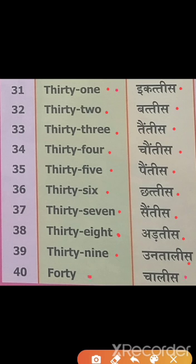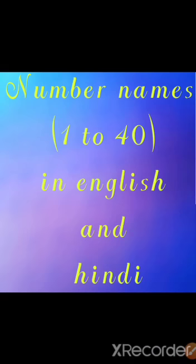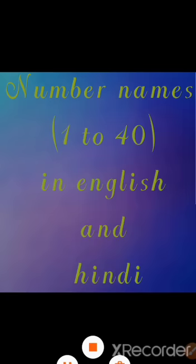THIRTY ONE 31, THIRTY TWO 32, THIRTY THREE 33, THIRTY FOUR 34, THIRTY FIVE 35, THIRTY SIX 36, THIRTY SEVEN 37, THIRTY EIGHT 38, THIRTY NINE 39, FORTY 40.